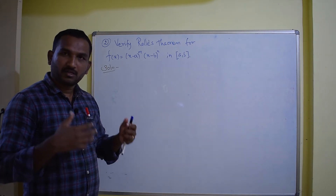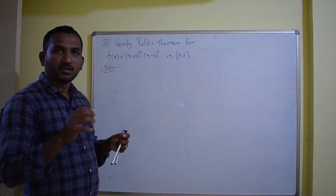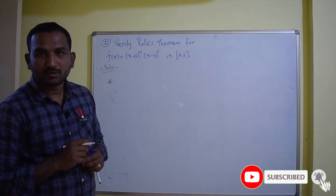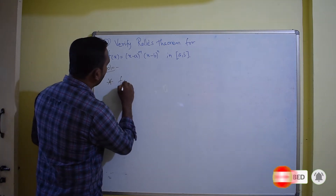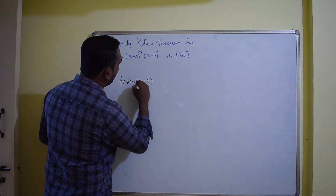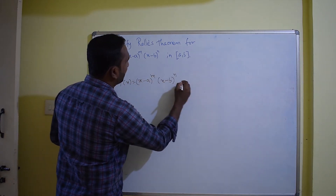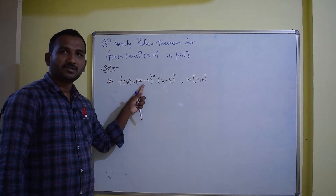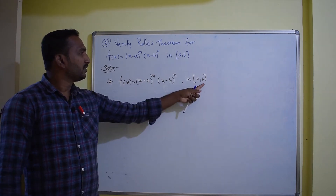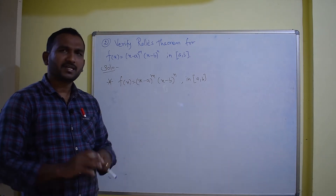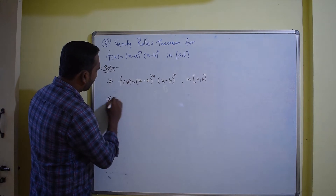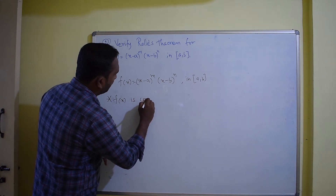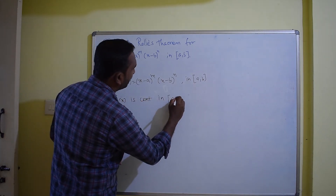Before we verify Rolle's theorem, we need to know the conditions. First, f of x should be continuous in the closed interval. The given function f of x equals (x minus a)^m times (x minus b)^n on [a, b]. If you substitute a, then a minus a becomes 0, and 0 into anything makes that term 0. Similarly, if you apply b, you get 0 again. So f of x is continuous in the closed interval [a, b].